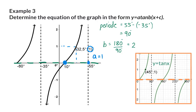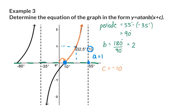The c value indicates a horizontal shift. Focusing on the x-intercept of the original tan graph at 0, where the graph moves upward from the midline: on the given graph, that point is at 10 degrees. This means the graph has shifted 10 degrees to the right. When a horizontal shift is in the positive direction, the c value is negative, so c = minus 10. The final equation is y = tan(2x − 10°).